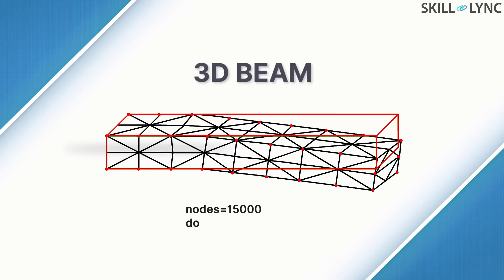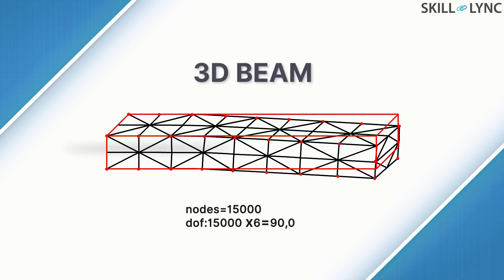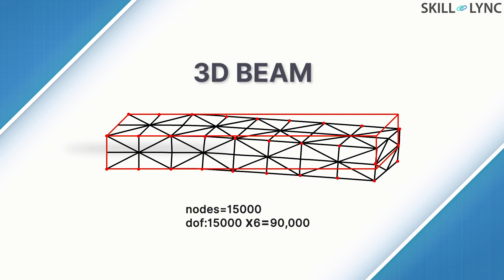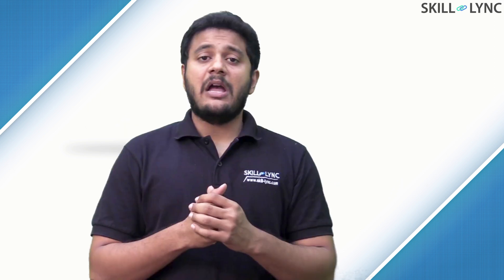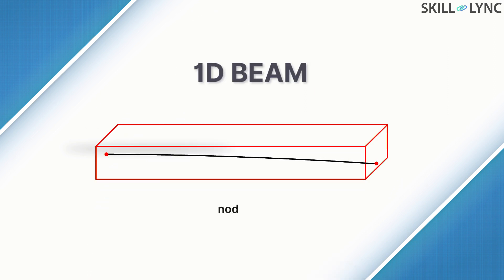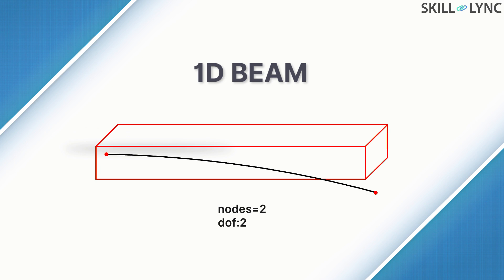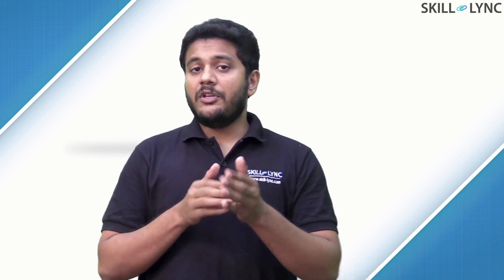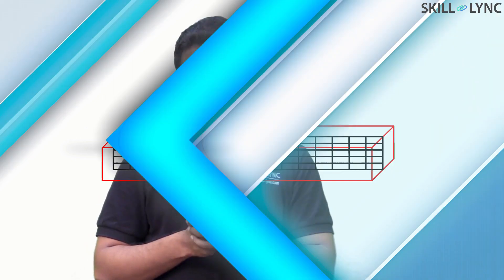Let us take this beam for example. It's clearly a 3D object. However, we could simplify this beam as a one-dimensional beam with two nodes and one element. The only input here would be the area of cross-section.